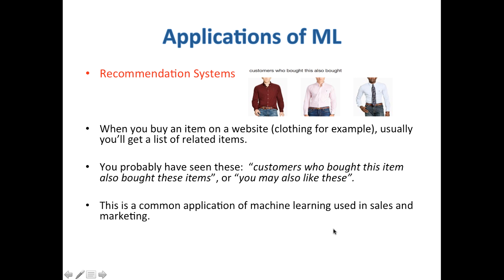Another application of machine learning is in recommendation systems. When you buy an item on a website — let's say clothing — you'll usually get a list of related items. You've probably seen 'customers who bought this item also bought these items' or 'you may also like this based on a certain purchase.' This is a common application of machine learning used in sales and marketing. Another example is Netflix: if you watch a certain movie, Netflix recommends a list of other movies based on what you watched, or shows 'people who watch this movie have also seen these other movies.'